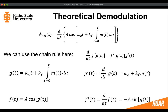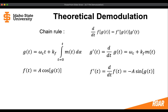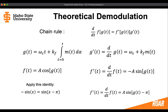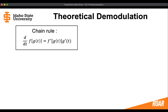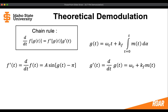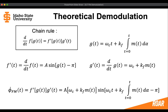If we take the derivative of f, we're going to get minus A times sine of g(t), where g(t) was the argument of the cosine. Now if we apply one more identity, we can get everything to be positive inside of that derivative of f. Taking the chain rule and putting it all together, combining each one of these terms, we get a long expression for the derivative of the frequency modulated signal.